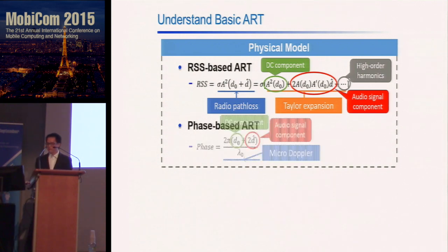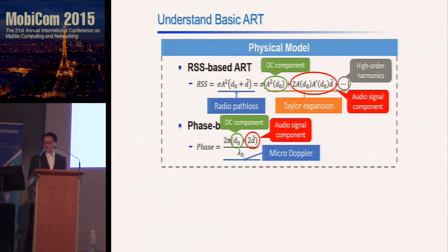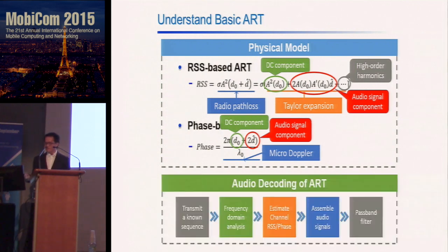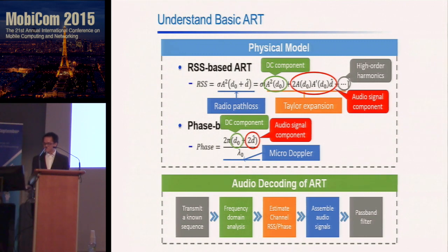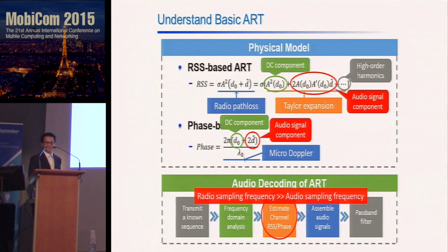For the phase-based ART, we model it following the micro-Doppler effect. Based on the physical model, we can decode audio from wireless signals. The decoding algorithm is straightforward: in the first steps we estimate the channel RSS and phase in the frequency domain by sending a known sequence, then assemble the audio signals and pass them through a bandpass filter to remove the DC components and higher-order harmonics.